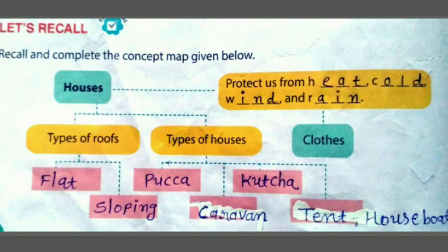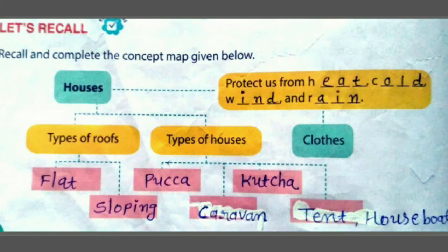Then 'Let's Recall' — summarizing the chapter. Houses protect us from heat, cold, wind and rain. Clothes also protect us from heat, cold, wind and rain. Types of roofs: flat roof and sloping roof. Types of houses: pukka house, kuccha house, caravan, igloo, tent, house boat.